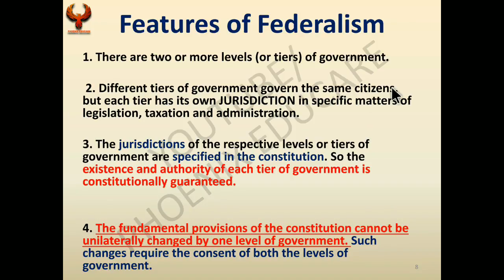Different tiers of government govern the same citizens. For example, people living in Uttar Pradesh are also citizens of India. The state government of Uttar Pradesh works for the people of Uttar Pradesh, but the union government works for people in Uttar Pradesh, Gujarat, Maharashtra, Tamil Nadu, Kerala, and all other parts of the country. So different tiers of government govern the same citizens.